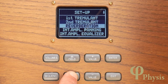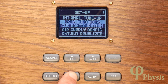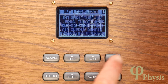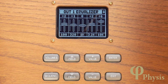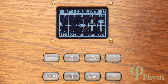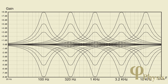If you scroll down the setup menu you'll find the external out equalizer, which allows you to adjust the tonal balance of each channel individually. Just as with the internal audio setup, there are five frequency bands with a range of plus or minus 8 dB, which can be used to compensate for the characteristics of the loudspeakers or their placement.